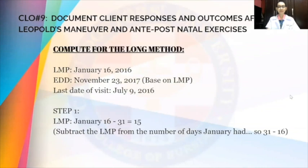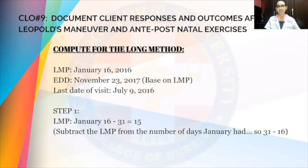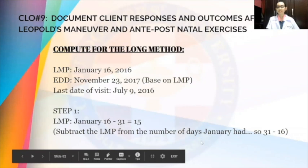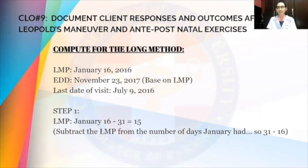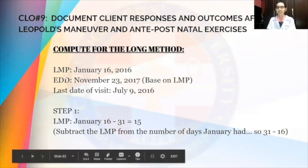Lastly, we compute for the AOG using the long method. We need the LMP and the last date of visit. In our example, the last menstrual period is January 16, 2016, and the last date of visit is July 9, 2016. The first step is to subtract the LMP date from the total number of days January has. January has 31 days, so 31 minus 16 equals 15. After obtaining the remaining days of January, we proceed with step 2, which is to list all months and days between January 16 and July 9.